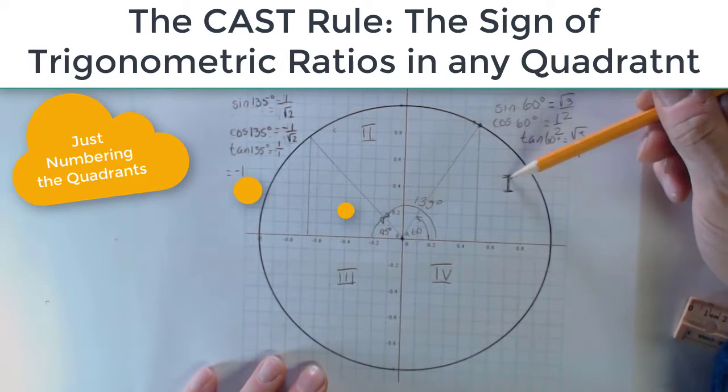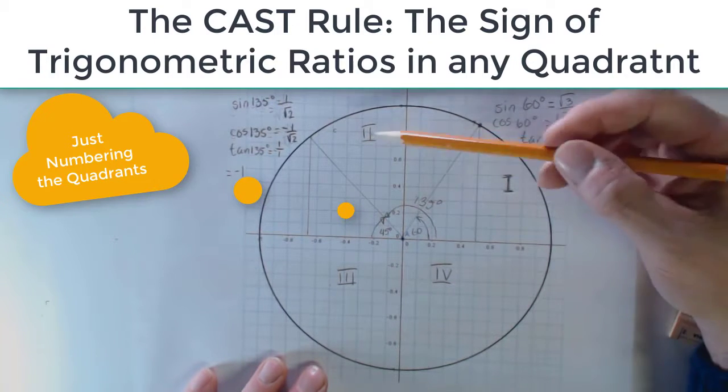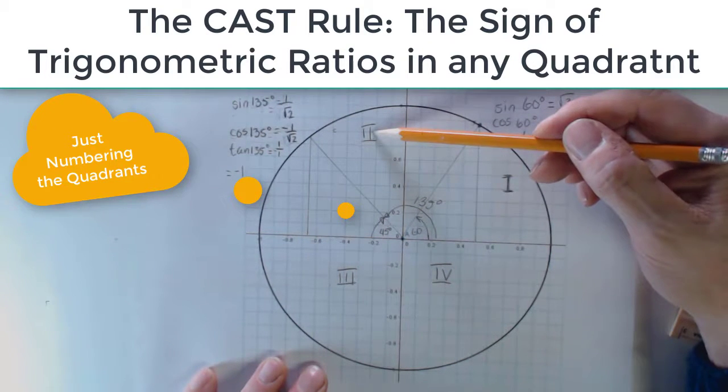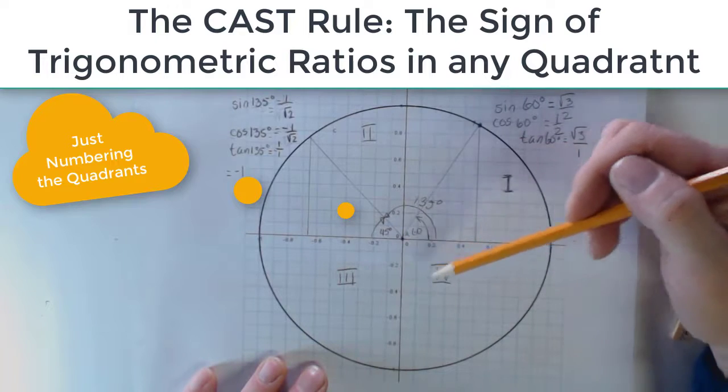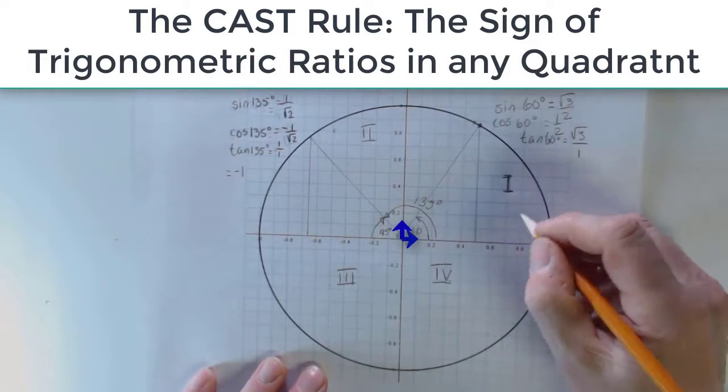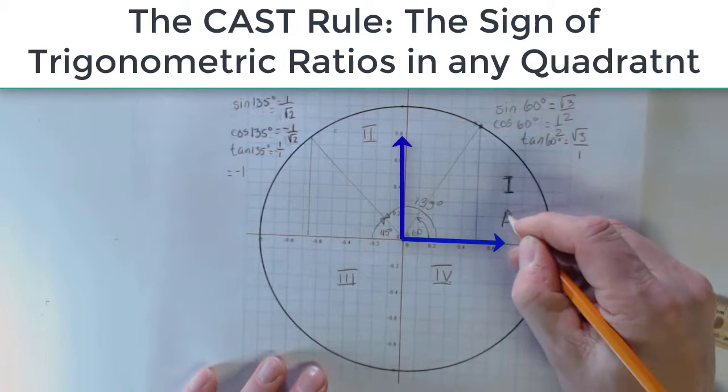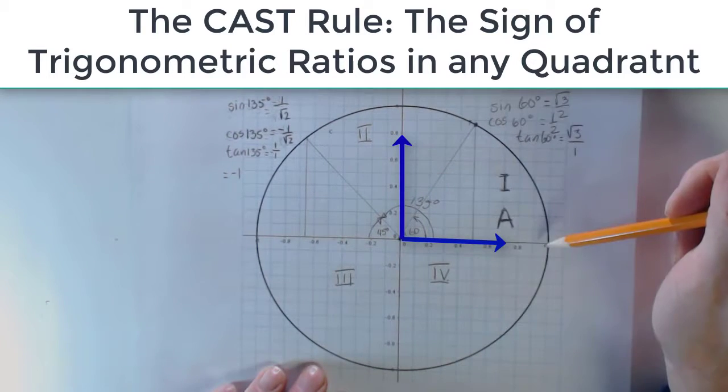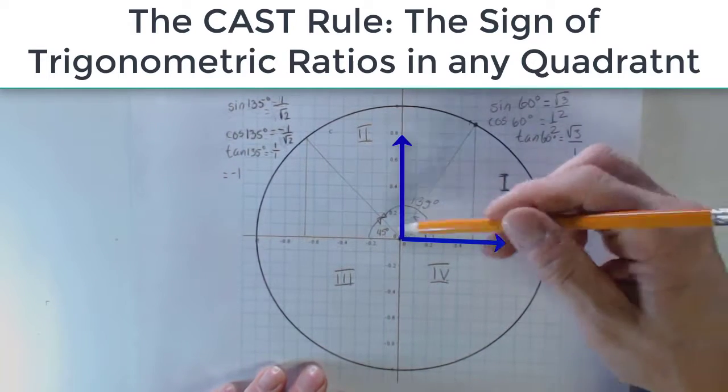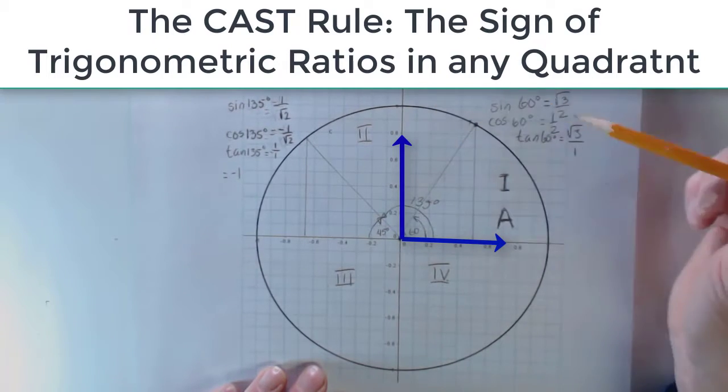So notice they start in this nice familiar quadrant 1, and then we progress counter-clockwise 2, 3, and 4. All of my ratios are positive, and so this gets labeled A for all. All of the ratios are positive here, because it is in the positive x-direction and the positive y-direction.